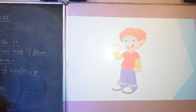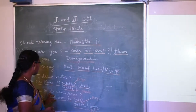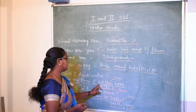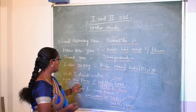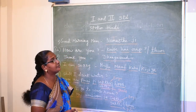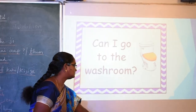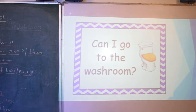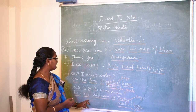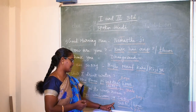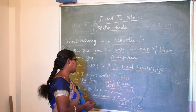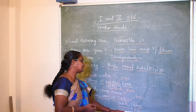Shall I drink water? Boys ask: 'Kya main paani pii sakta hoon?' Girls ask: 'Kya main paani pii sakti hoon?' The 'A' sound is for boys, the 'E' sound is for girls. Can I go to the washroom? Boys ask: 'Kya main washroom ja sakta hoon?' Girls ask: 'Kya main washroom ja sakti hoon?'